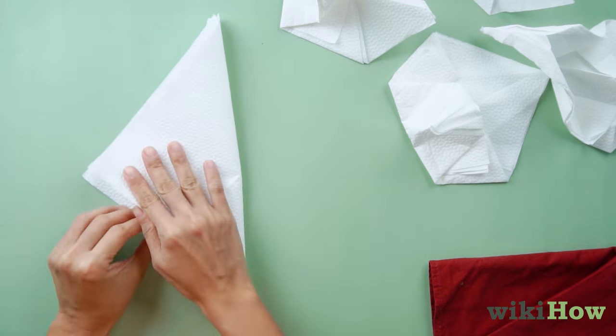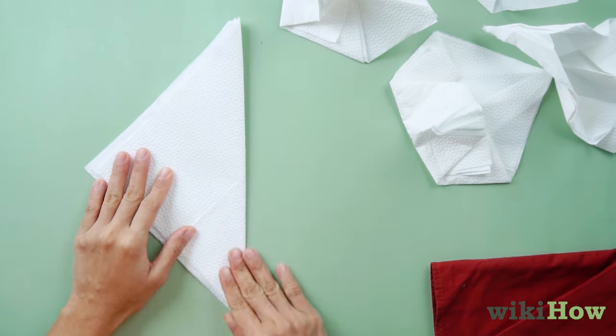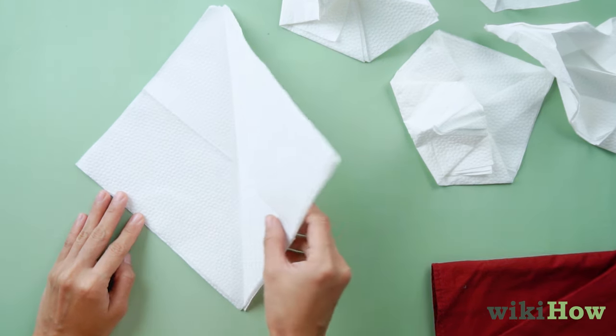Fold the napkin in half vertically to make a triangle, then open it up again and flip it over so the crease is facing down.